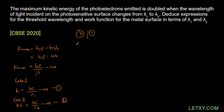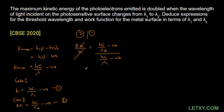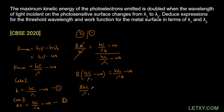Now I'm going to divide equation number two by equation number one. So it will be 2K/K = (hc/λ₂ − W₀) / (hc/λ₁ − W₀). As you can see, K cancels out. Now doing cross multiplication, it becomes: hc/λ₁ − W₀ = hc/λ₂ − W₀, multiplied through by 2, giving 2hc/λ₁ − 2W₀ = hc/λ₂ − W₀.